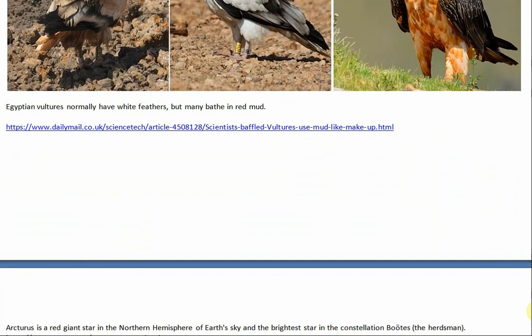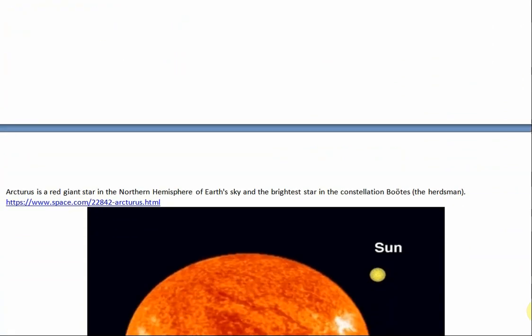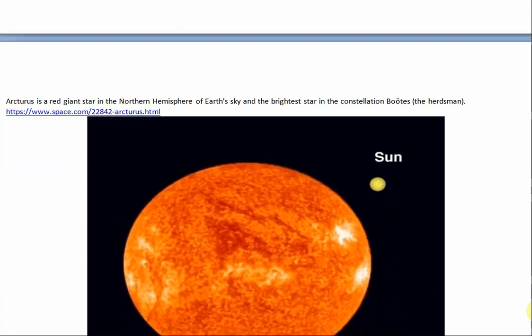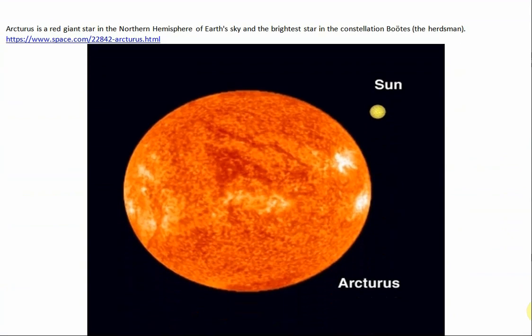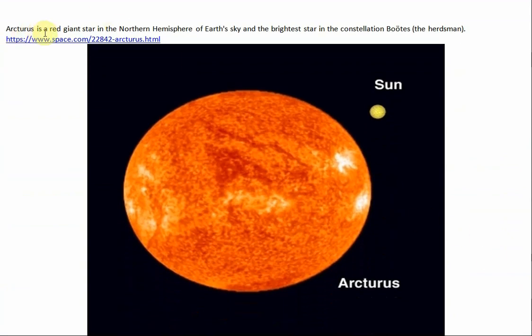I wonder if they had telescopes back then. Nobody has been able to show that they had telescopes. So, how did they figure this out? Arcturus is a red giant star in the northern hemisphere of Earth's sky and the brightest star in the constellation Boötes.